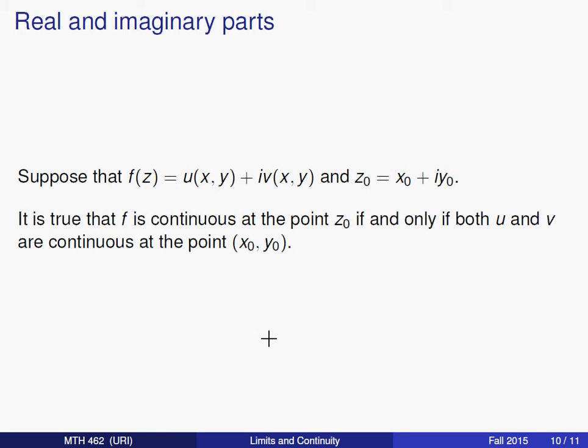Just like we saw with limits, in deciding whether a function is continuous it helps to take a look at the real and imaginary parts of that function. If we can break our function f into a real part u and an imaginary part v and if we want to take a look at whether the function is continuous at the point z0, and z0 has real part x0 and y0 as its imaginary part, then to decide whether it's continuous all we need to do is check whether the functions u and v are continuous at the point (x0, y0).